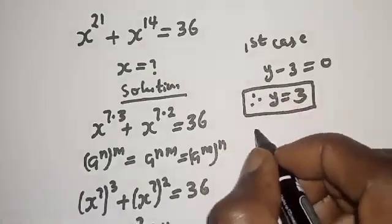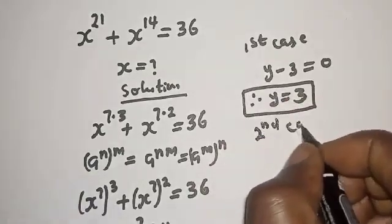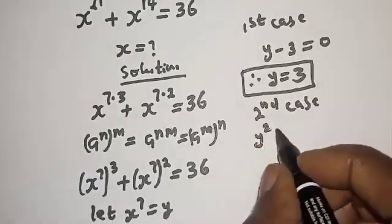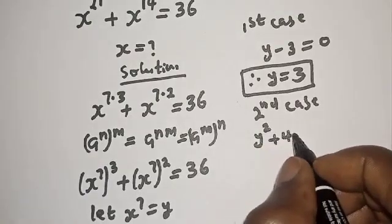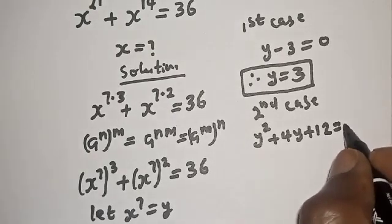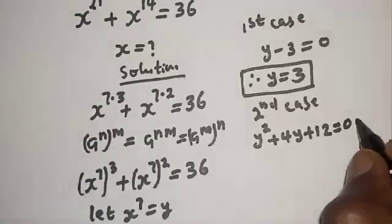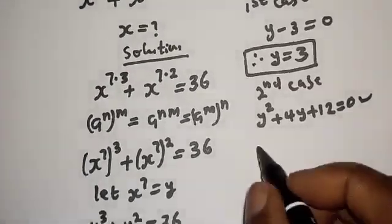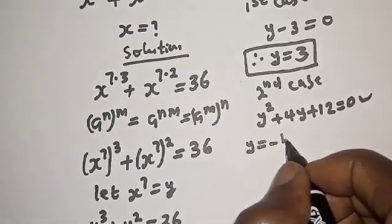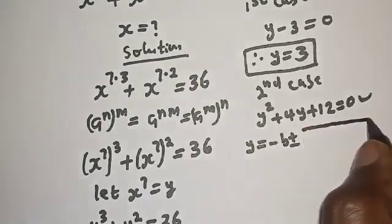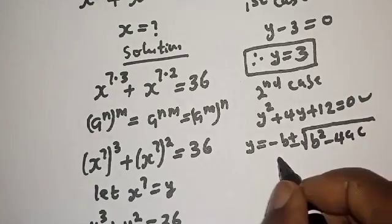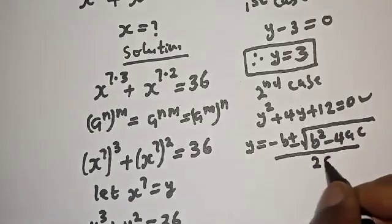The second case, y squared plus 4y plus 12 equals 0, is a quadratic equation which can be solved using the quadratic formula: y equals minus b plus or minus square root of b squared minus 4ac, over 2a.